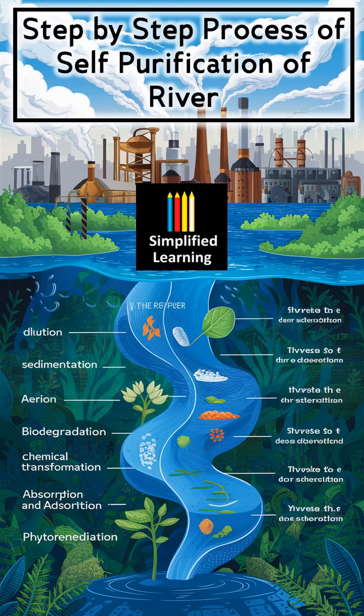Welcome to Simplified Learning. Today we will be talking about river self-purification. Rivers have a natural ability to cleanse themselves through various physical, chemical, and biological processes. This self-purification involves several steps that occur as pollutants enter and travel through the river system. Here is a step-by-step process of the self-purification of a river.